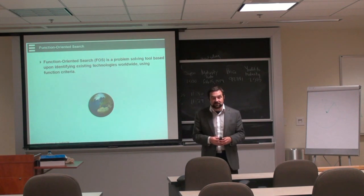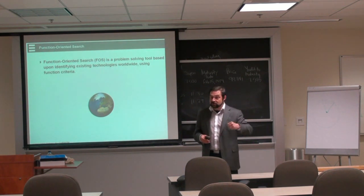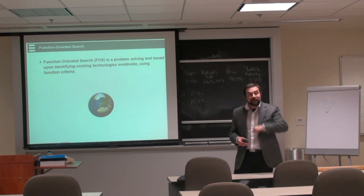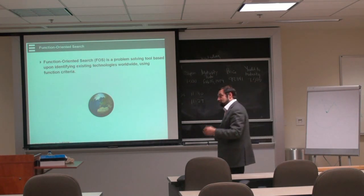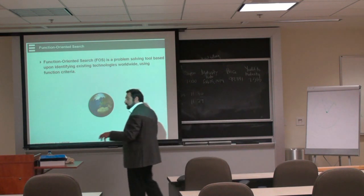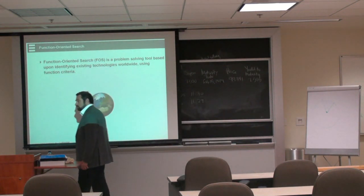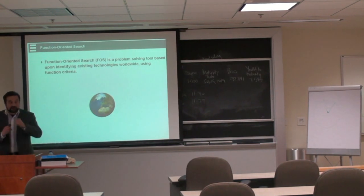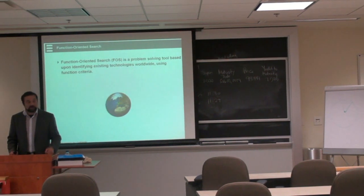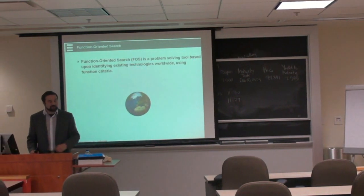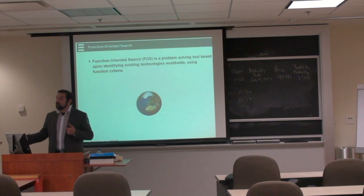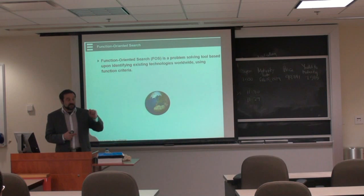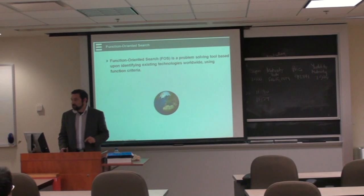Function-oriented search basically tells you: I want to find solutions that already exist and apply them to my area. But I'm not talking about solutions that my competitors have. I want to find solutions that nobody ever heard about. Why? Because if I apply them, I will be ahead of the game. How do I find a solution that will work for me? I will find the ones that perform the same function as I need.